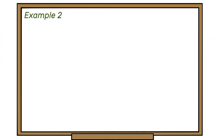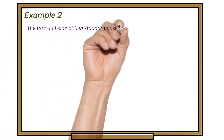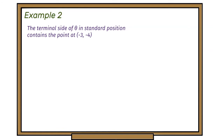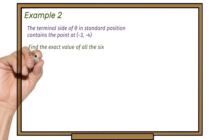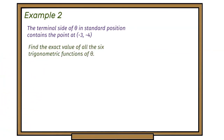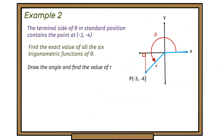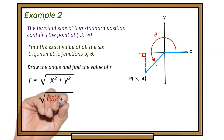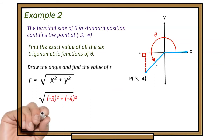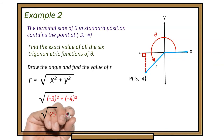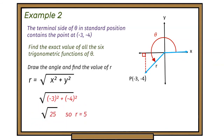Example 2: The terminal side of theta in standard position contains the point at (−3, −4). Find the exact value of all six trigonometric functions of theta. It's in the third quadrant at (−3, −4). We form our triangle and use the Pythagorean theorem: r is the square root of x squared plus y squared. Substituting x = −3 and y = −4, we find r is 5.